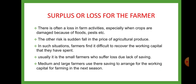Surplus or loss for the farmers: There is often a loss in a farm activity, especially when crops are damaged because of floods, pests, etc. The other risk is a sudden fall in the price of agricultural produce. In such situations, farmers find it difficult to recover the working capital they have spent. Usually, it is the small farmers who suffer loss due to lack of savings. Medium and large farmers use their savings to arrange for the working capital for farming in the next season.